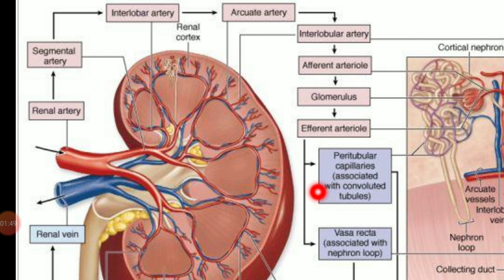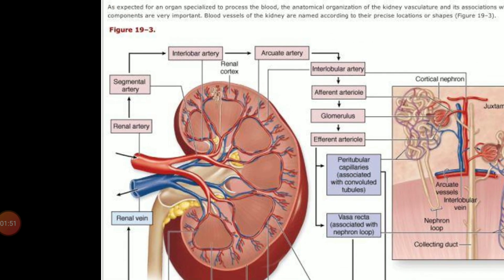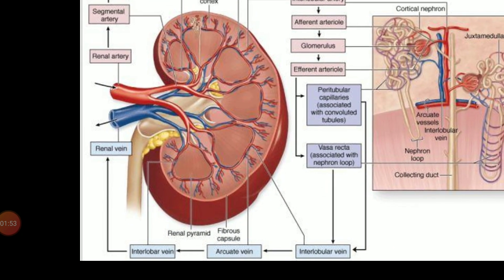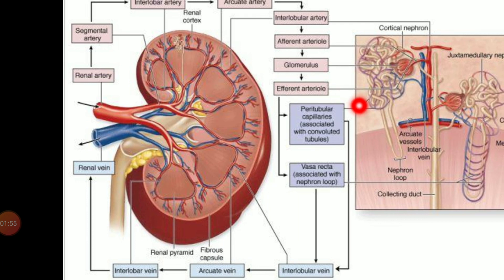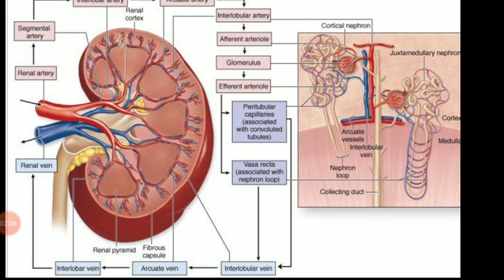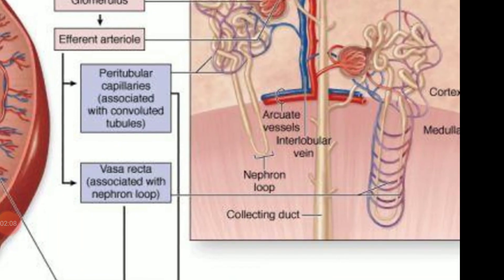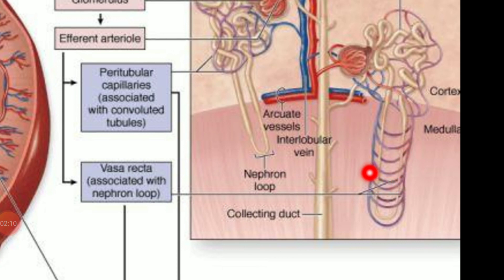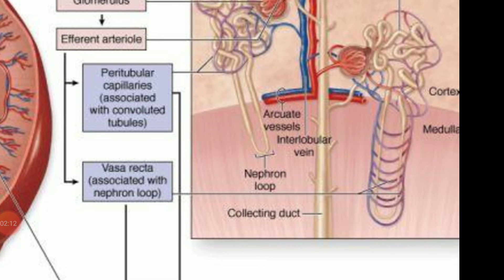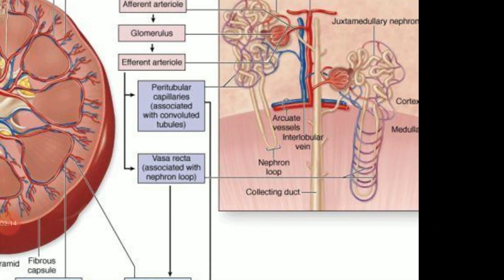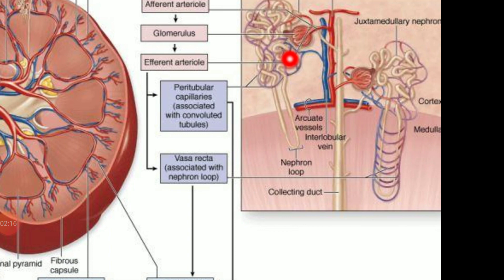This efferent arteriole is now divided into the peritubular capillary and the vasa recta. These two sets of capillaries — the peritubular capillary and the vasa recta, which has a hairpin-like structure — are actually going to give the blood supply towards the epithelium of the renal tubule.